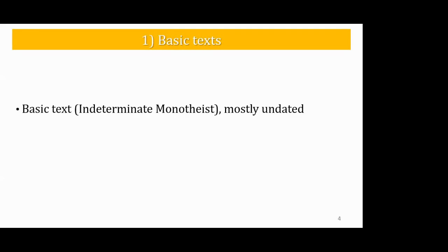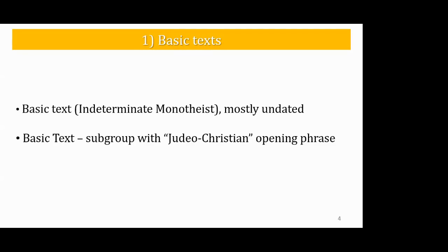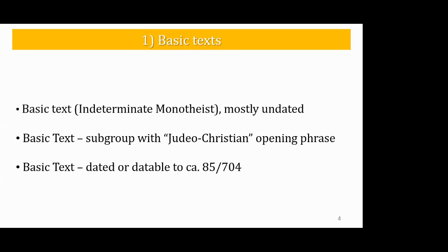Let's start with the basic texts — the earliest types of texts found on the rocks. Basic texts can be indeterminate monotheists, mostly undated. There is a subgroup with Judeo-Christian opening phrases, and then there is a basic text dated or datable to circa 85 AH or 704 AD.